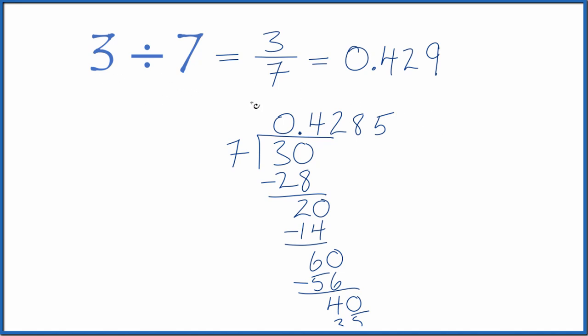So again, 3 divided by 7. You could call it 3 sevenths or 0.429, and you could keep dividing here if you needed more numbers. This is Dr. B. Thanks for watching.